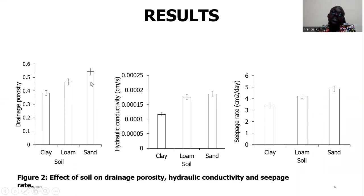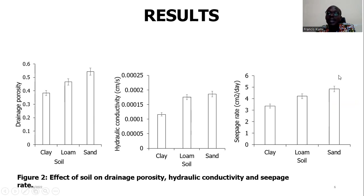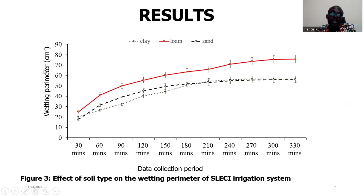We tested drainage porosity, hydraulic conductivity, and seepage reach of the different soil types. Sandy soil, as expected, had the highest drainage porosity, the highest hydraulic conductivity, and a higher seepage reach, while clay had the lowest.